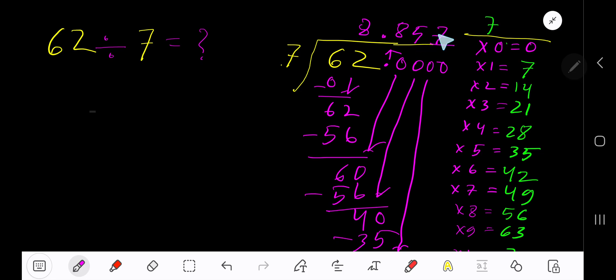But since we have gotten 3 places after a decimal, so just place here 3 dots. So our answer is 8.857...